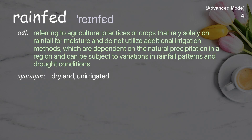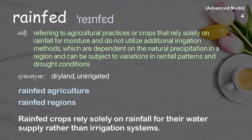Rain-fed: Referring to agricultural practices or crops that rely solely on rainfall for moisture and do not utilize additional irrigation methods, which are dependent on the natural precipitation in a region and can be subject to variations in rainfall patterns and drought conditions. Example: Rain-fed crops rely solely on rainfall for their water supply rather than irrigation systems.